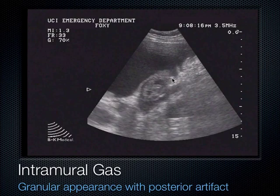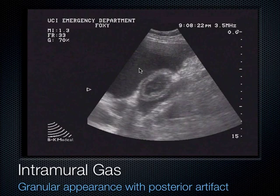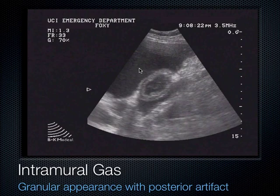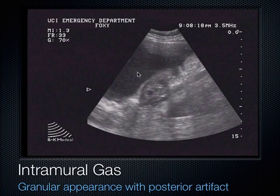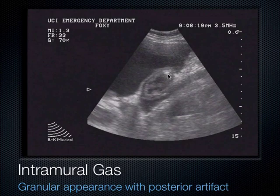The fluid from ascites actually makes the intestines really easy to see. This patient was really sick — they had some colitis, and this thickened bowel wall plus air in the wall of the bowel told us that this patient was very sick.